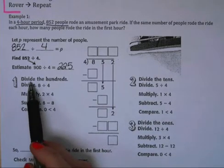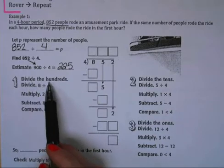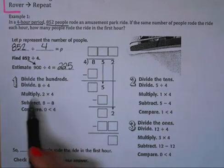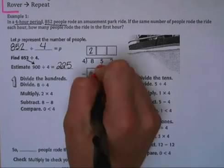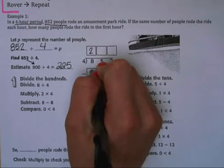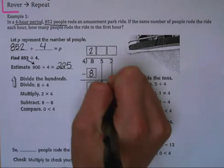Now step one, we're going to divide the hundreds. So we have 8 divided by 4. We know that 2 times 4 is 8, so we write down our 2 up here. 8 minus 8 is 0, and we bring down our 5.